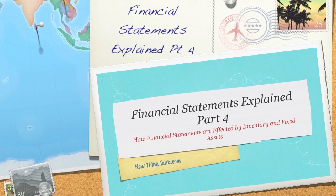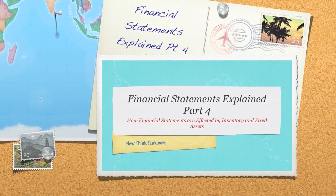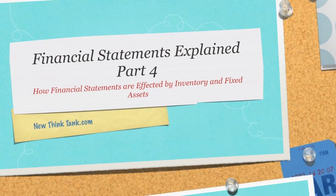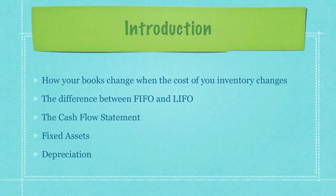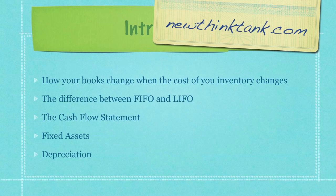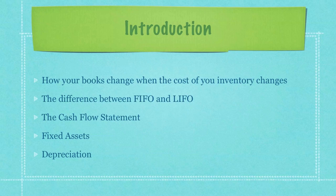Hello Internet, and welcome to part four of my financial statements tutorial. This is the final tutorial. If you didn't watch one, two, or three, there are links to them on the screen — you should definitely watch them, otherwise you're going to be completely confused. Here specifically, I'm going to go over how your books or financial statements are going to change when the cost of your inventory changes, as well as first in first out, last in first out, the cash flow statement — the only financial statement we have not covered so far — fixed assets and how they affect your balance sheet, and depreciation.